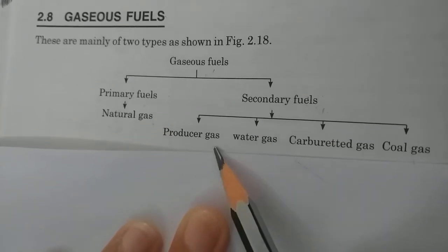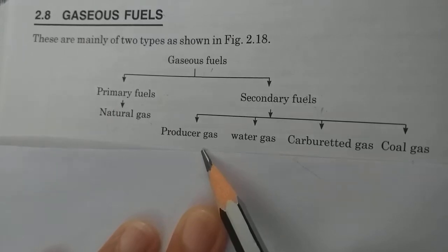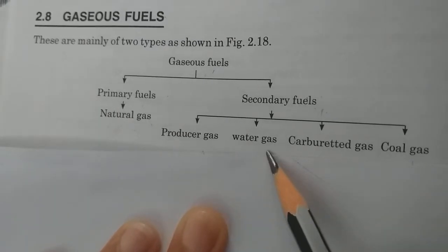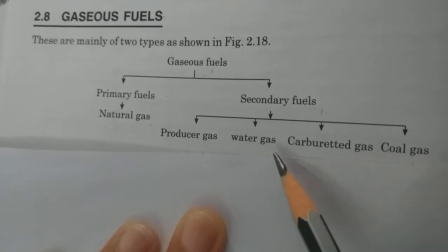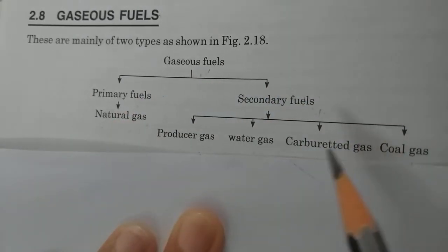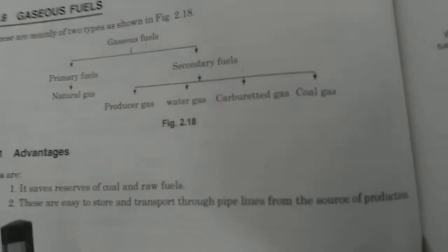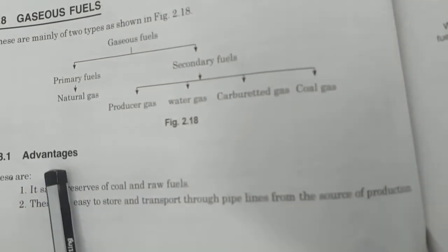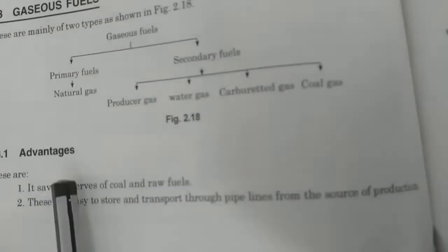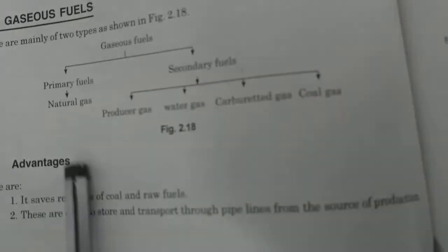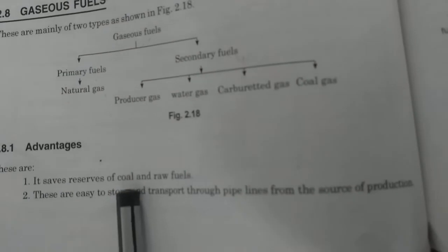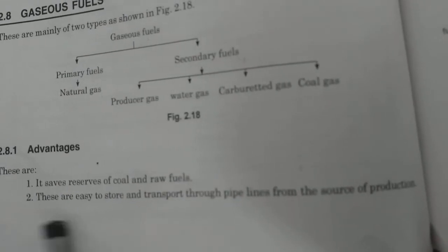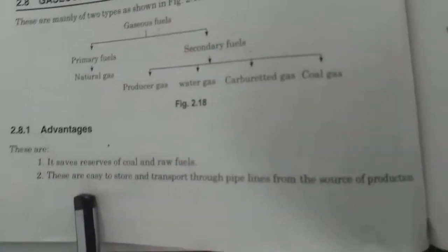Secondary fuel is produced by man-made processes. Examples are producer gas, water gas, carbureted gas, and coal gas. Producer gas is a combination of carbon monoxide and nitrogen. Water gas is a combination of carbon monoxide and hydrogen. This is the classification of gaseous fuel. Now we will discuss advantages of gaseous fuel.